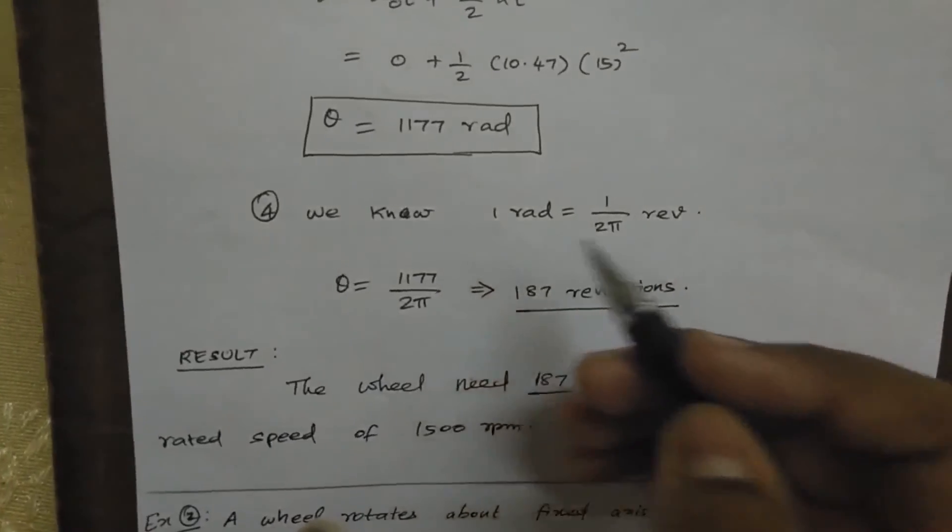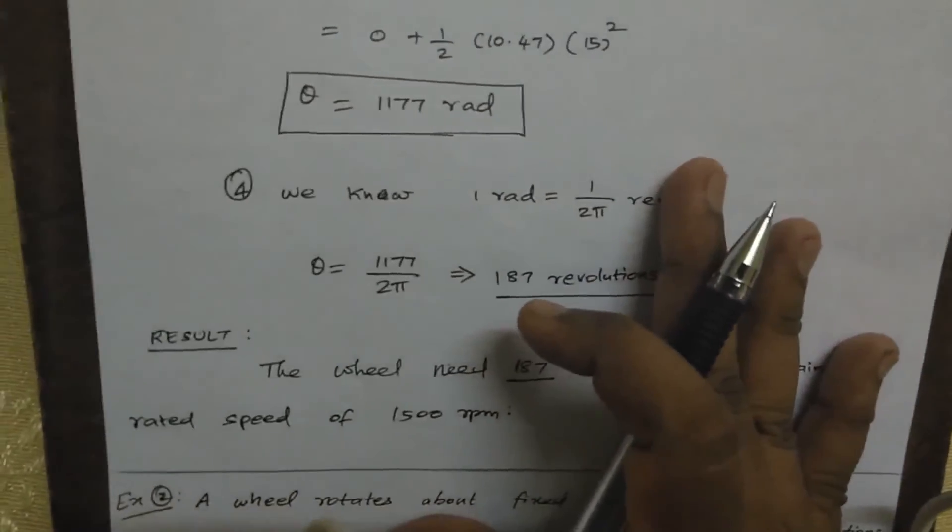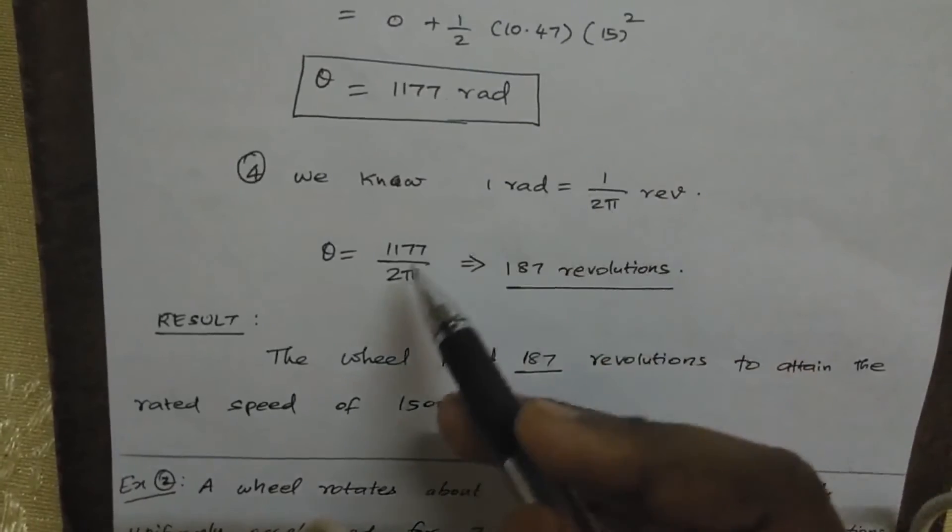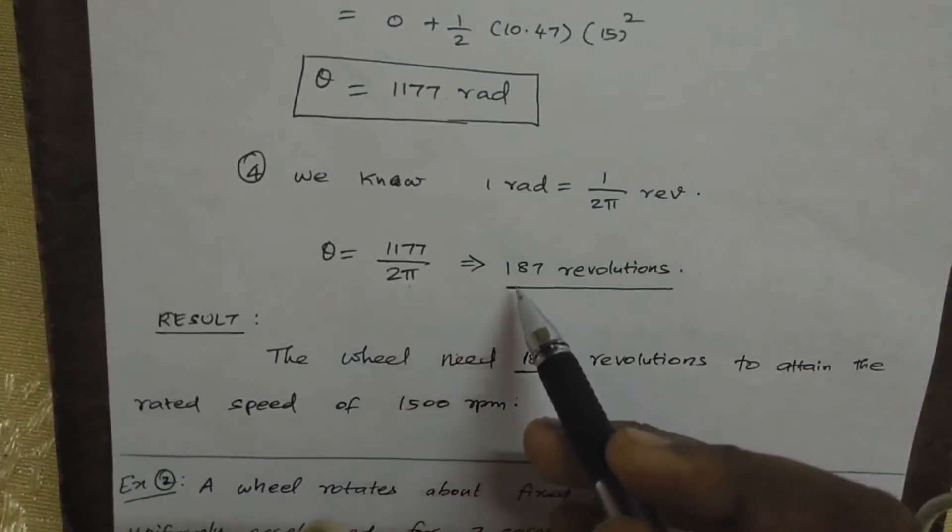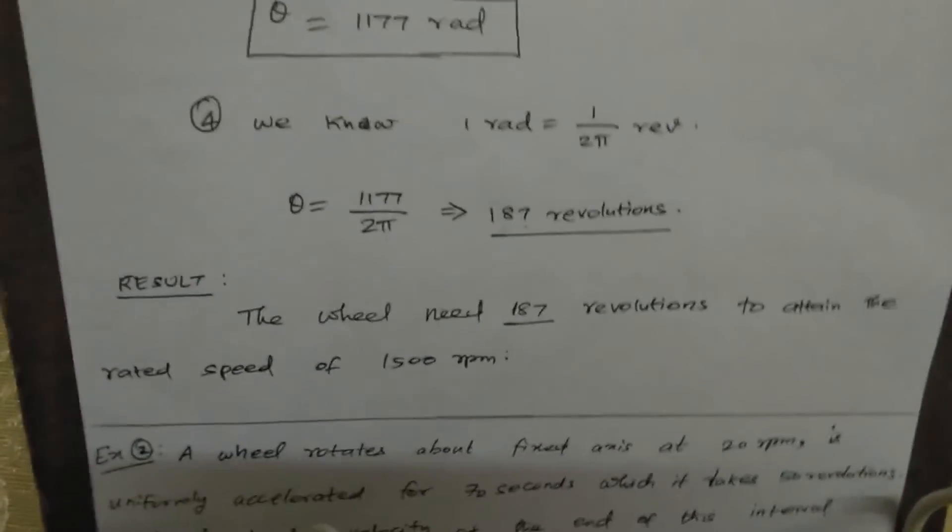1 radian equal to 1 by 2π revolutions, that is 187 revolutions.